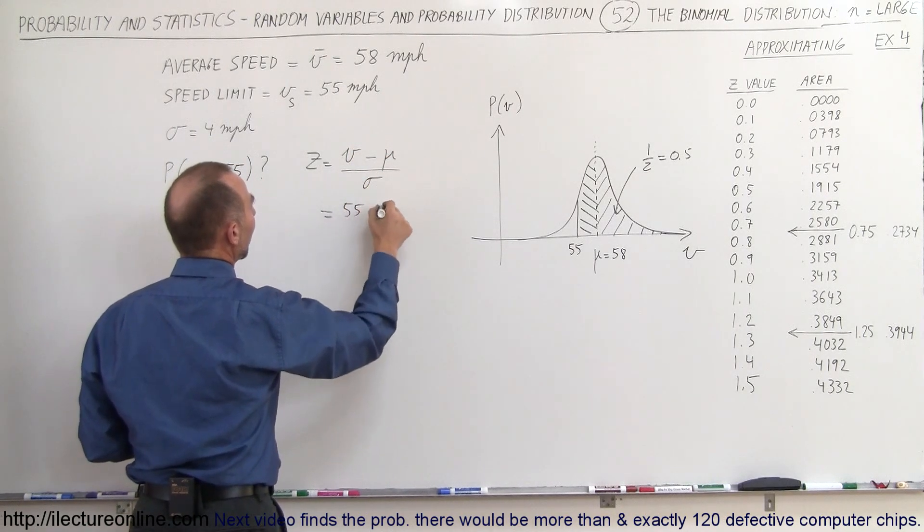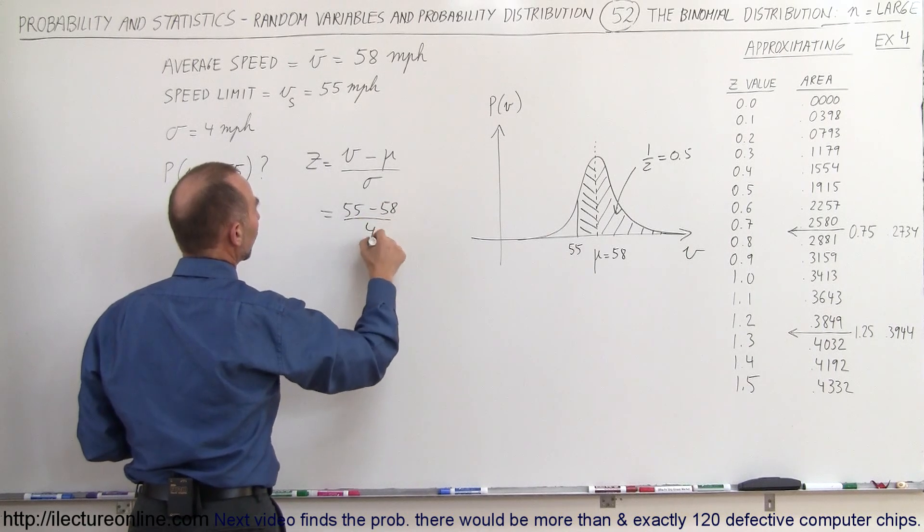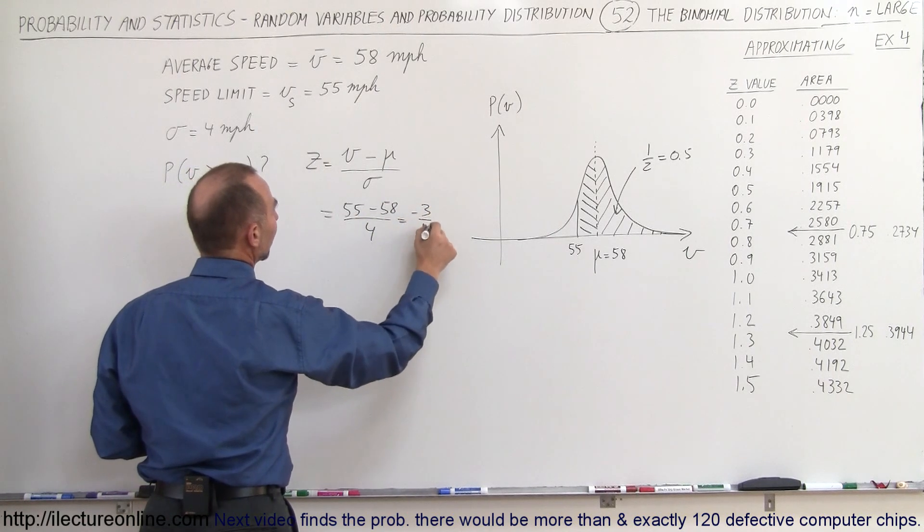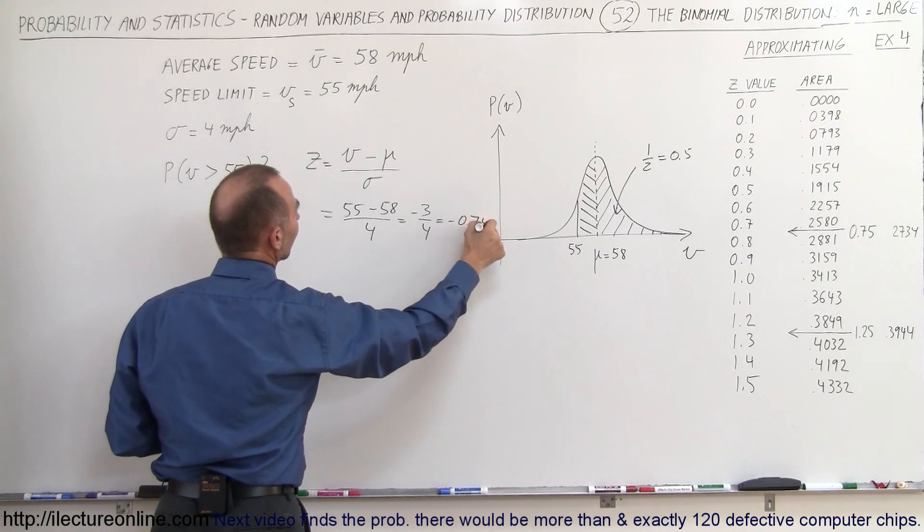So in this case, it's 55 minus 58 divided by 4, which is minus 3 divided by 4, which is minus 0.75.